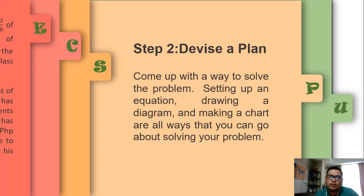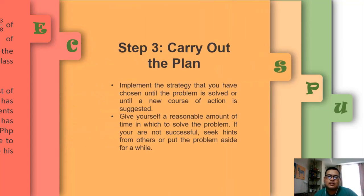So you can easily understand, you can easily plan out, you can easily solve the problem. That's devising a plan. Next, after devising a plan, you have to carry out the plan. If, say for example, you have already created a mathematical sentence or an equation, so you have now to implement that particular strategy that you have chosen.